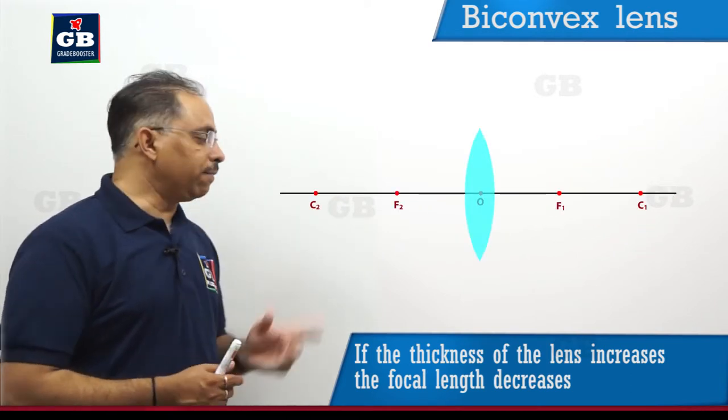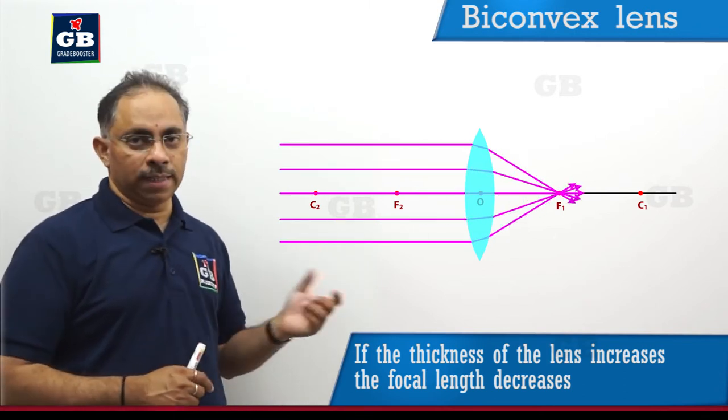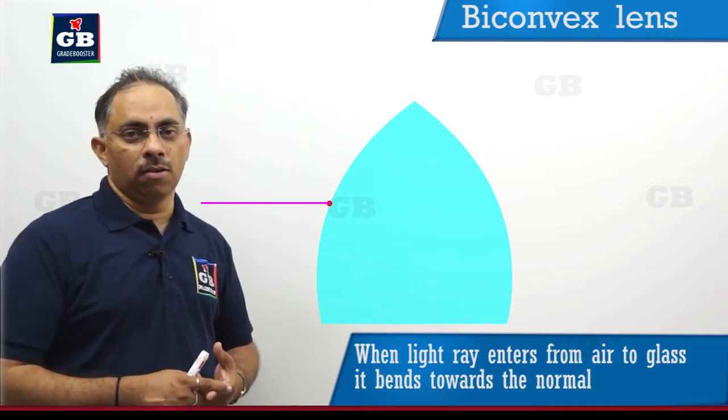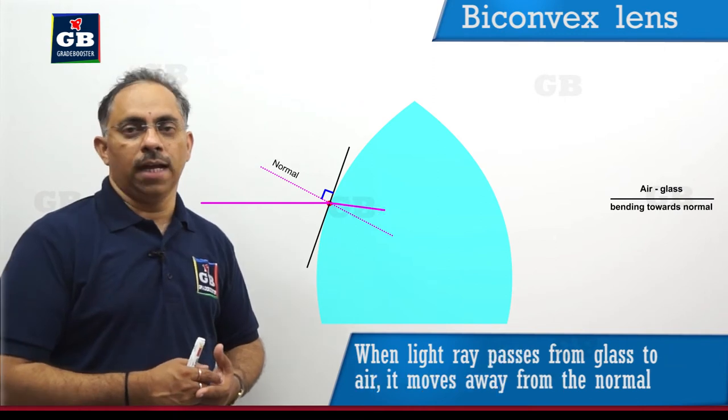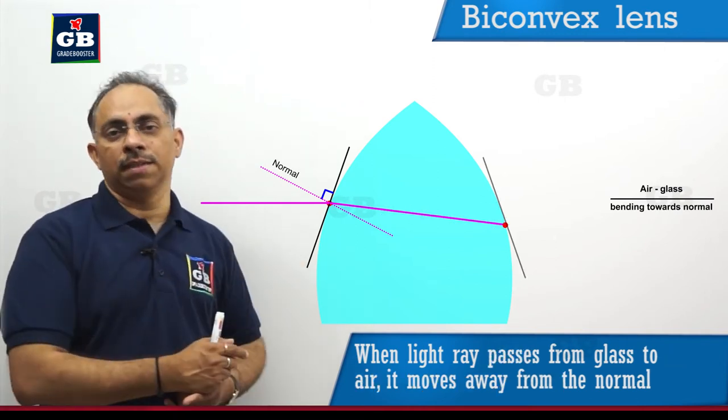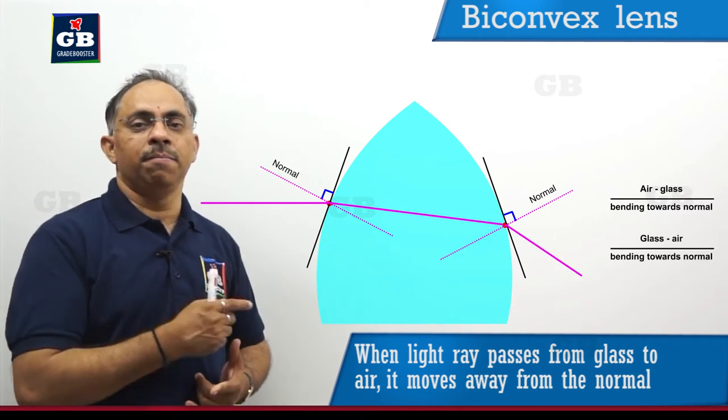Basically, if I take one more parallel beam of light passing through this particular thick lens, then what is happening? When they are going from air to the glass, they will bend towards the normal. And similarly, on the right side of the surface of the lens, when they are traveling from glass to air, they will bend away from the normal.